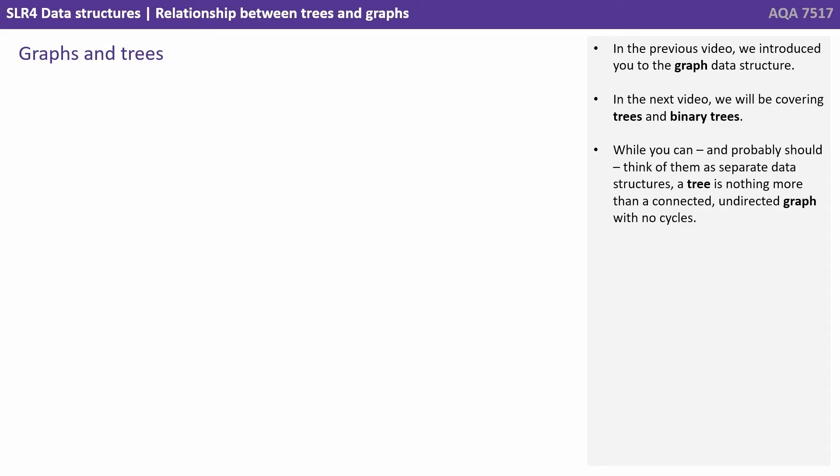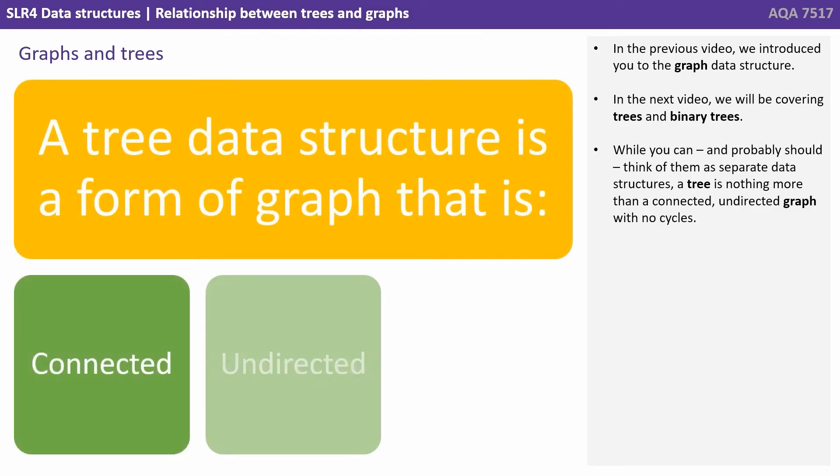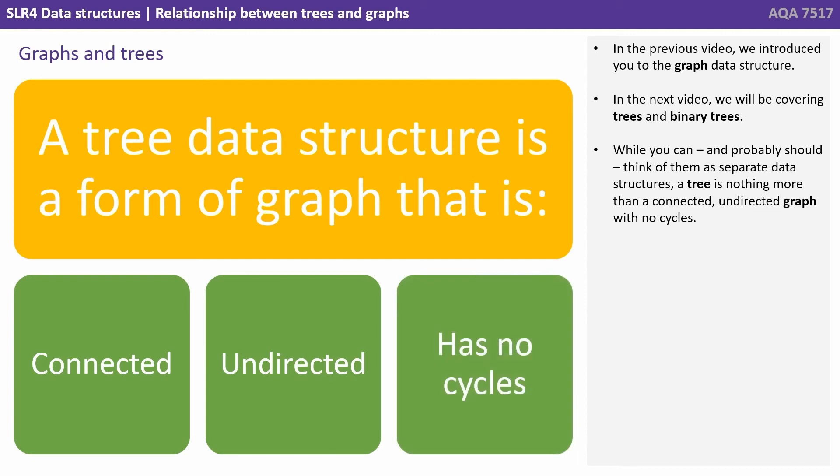While you can and probably should think of them as separate data structures, a tree is nothing more than a connected, undirected graph with no cycles.